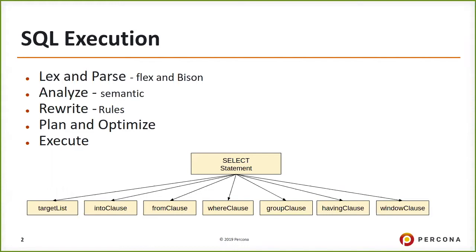The first step is lexical analysis, then parsing — using common tools like flex and bison, which are default in any Linux or Unix system. The next stage is analyze, where we analyze the semantics of the SQL statement. Then it goes for rewrite, where the statement is rewritten based on rules. The next stage is plan and optimize — the entire brain of Postgres. And the final stage is execute. Even a SELECT statement has a lot of sub-clauses, including target list, FROM, WHERE, GROUP BY, and so on.